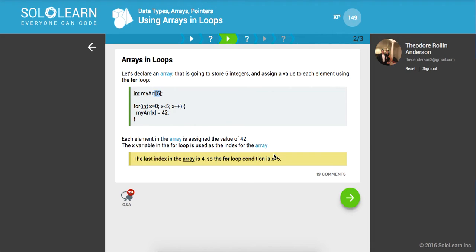So, you're always going to go up to the length minus 1. Similarly, you could write this as x is less than or equal to 4 and get the same result.